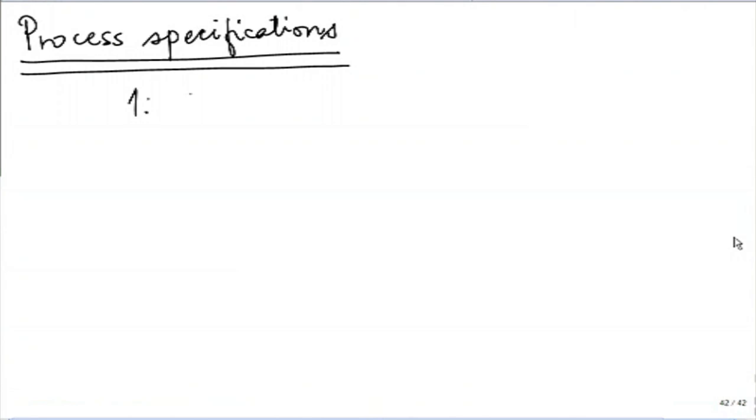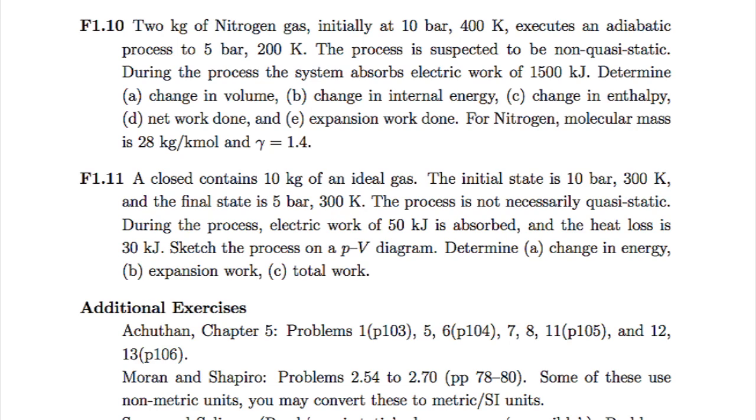Whether quasi-static or not is important. There are some exercises where it may be specified that the process is quasi-static. In exercise F1.10 there is a hint that the process is suspected to be non-quasi-static; in F1.11 the process is not necessarily quasi-static. This is a warning. For senior students I may not give this warning — they are expected to be experienced enough to recognize that the data suggests the process is likely non-quasi-static. So do not make a default assumption that it is quasi-static.